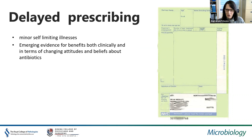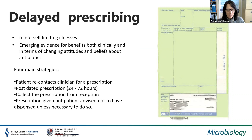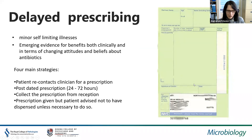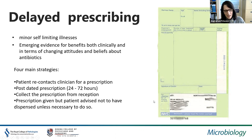Delayed prescribing is useful for usually self-limiting minor illnesses and can be reassuring for patients. Strategies include the patient re-contacting the clinician if not improving, receiving a post-dated prescription they can't use for 24–72 hours, picking up a prescription from reception only if not improving, or being given the prescription but advised not to have it dispensed unless necessary. Patients often find this very acceptable — they want reassurance that an antibiotic would be available if things got worse, but are happy not to take one immediately.